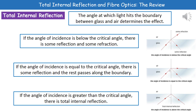In the top diagram, the angle of incidence is below or less than the critical angle. If we have our ray of light hitting that boundary between glass and air below the critical angle, then what we actually find is that there's some reflection and some refraction occurring with our ray of light.